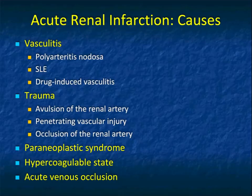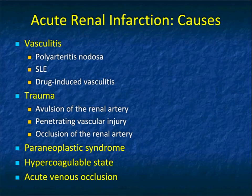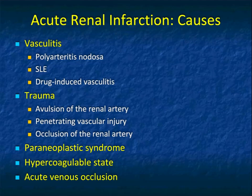When we think about stenosis, we also think about infarction. Renal infarction can be due to many causes beyond atherosclerotic disease, including vasculitis such as polyarteritis nodosa or SLE, trauma, paraneoplastic syndromes, hypercoagulability states, and acute venous occlusion. Renal infarction can be segmental or global in extent — most commonly segmental. It can be an isolated process or part of a multi-system disease. Patients may present incidentally or with acute flank pain, fever, and hematuria.